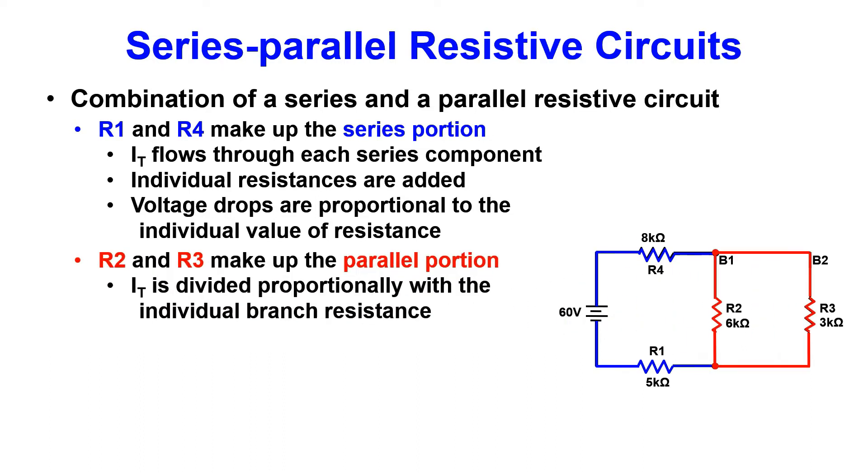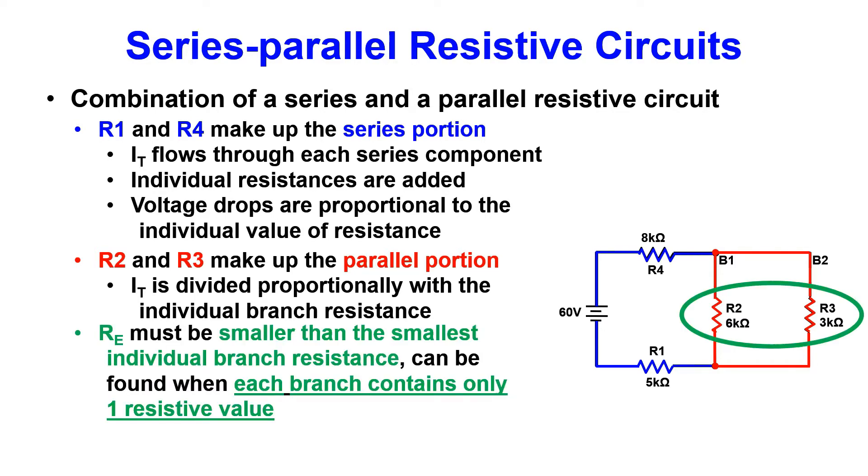Now to look at the parallel portion of the circuit. R2 and R3 make up the parallel portion shown in red. IT will be divided proportionally with the individual branch resistances. RE is going to be smaller than the smallest individual branch resistance and this value can only be found when each branch contains only one resistive value. Branch voltage drops will be equal. We'll take a deeper look at that in a minute.